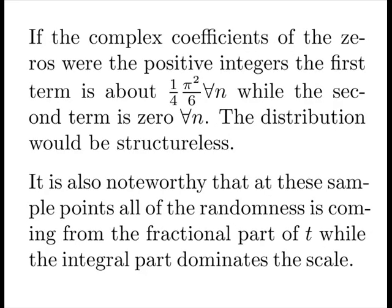The first thing we know is if the complex coefficients of the zeros were the positive integers, the first term becomes a mutation of the Basel problem, and gives us something about one quarter of pi squared over 6 for all n, while the second term is zero for all n. That is, the distribution would essentially be structureless, and certainly wouldn't have wide-scale variation like we see. It would oscillate, but always have to return to these fixed points.